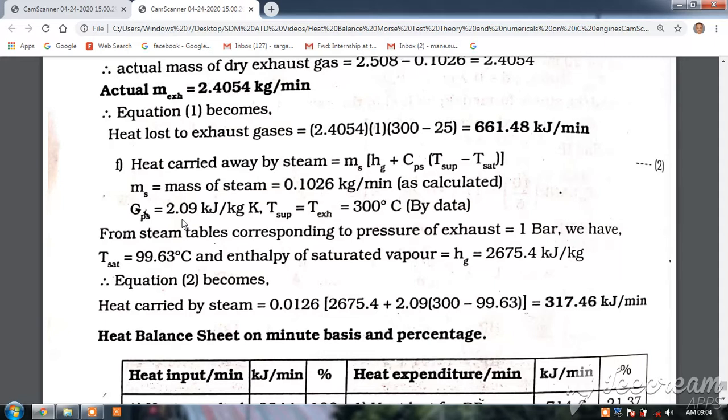The superheated steam is going to exhaust at 300°C. From steam tables corresponding to exhaust pressure of 1 bar, T_saturation is 99.63°C and enthalpy of saturated vapor h_g is 2675 kJ/kg. Substituting these values into the equation...